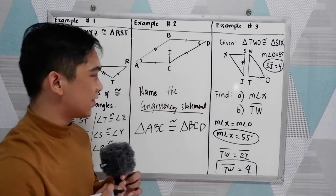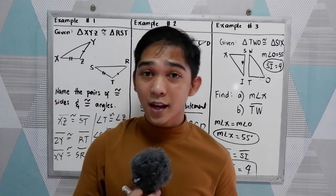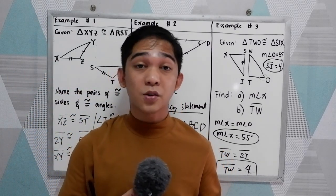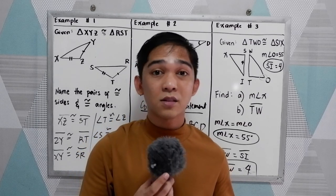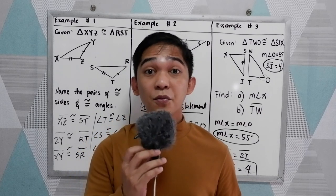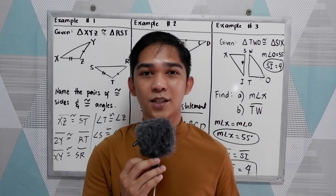So that is the congruent triangles — the corresponding parts of two congruent triangles are congruent. Thank you for watching Senior Pablo TV.